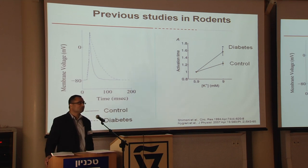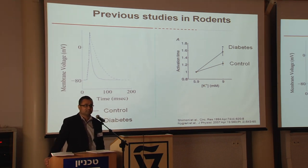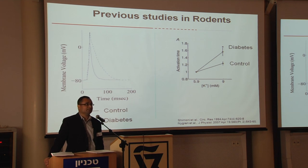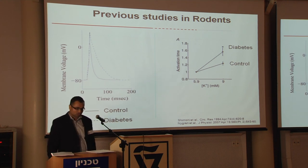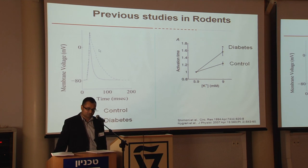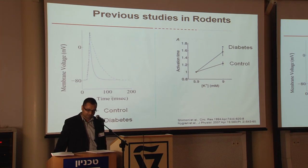A number of previous studies in cardiac electrophysiology have used rodent models of diabetes — rat and mouse. Pioneering studies done by Professor Yakin Shimoni, who trained in Israel and is now based in Calgary, have shown consistently that in diabetic rats the cardiac action potential duration is prolonged. On the left hand side of the panel you can see a ventricular action potential from a rat ventricular myocyte, and the action potential duration is significantly prolonged in diabetes.